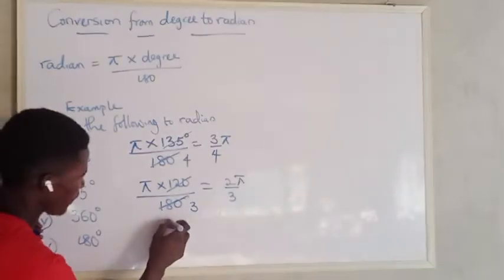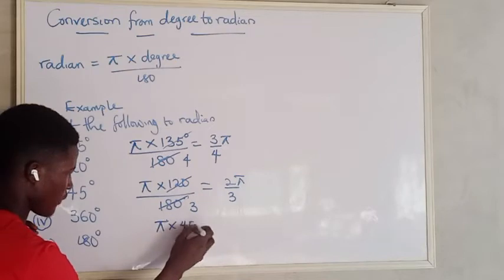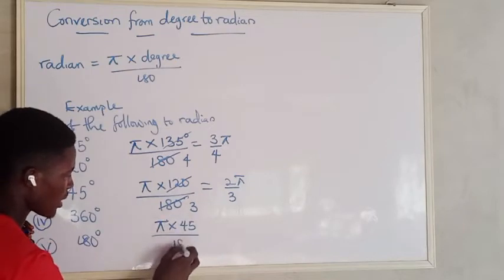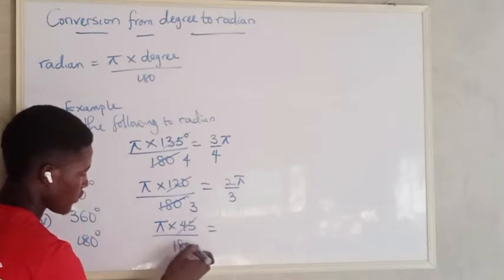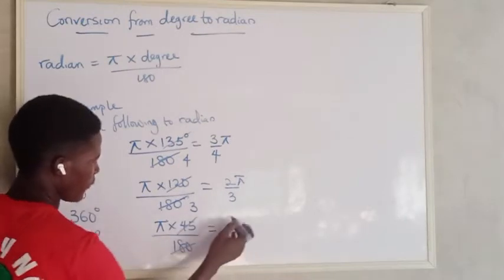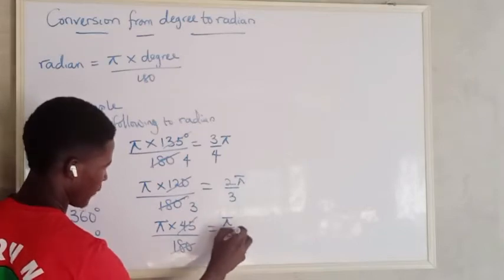Alright, so let's see the next one. We have 45. So that will be pi multiplied by 45 all over 180. And that will be pi over 4.